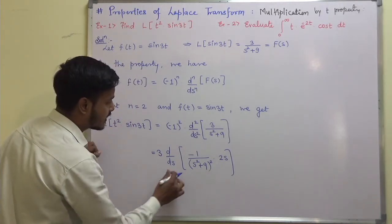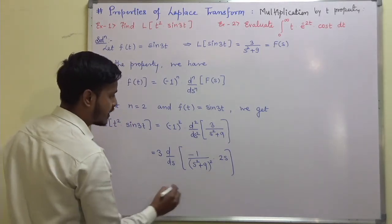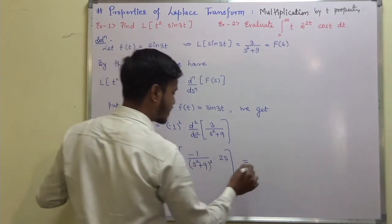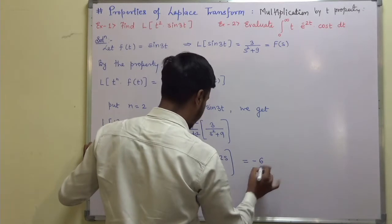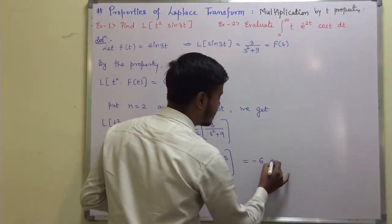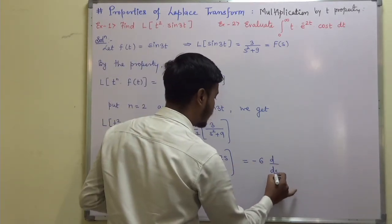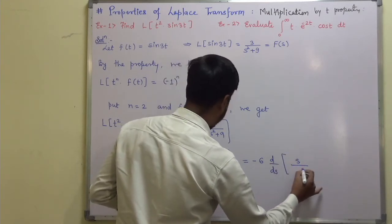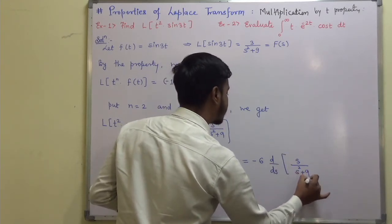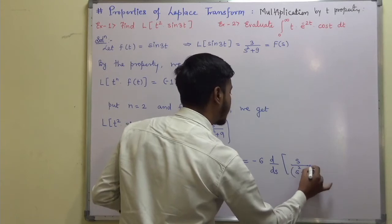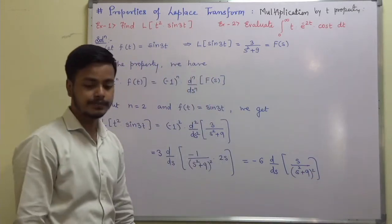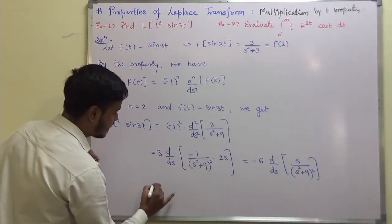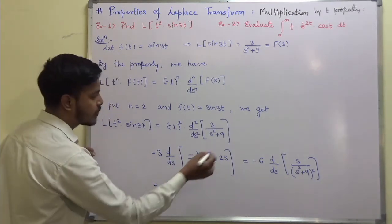Now take one more derivative. Before that, I take the minus 2 outside, giving minus 6. Now apply d/ds of s upon (s²+9) whole squared. Apply the quotient rule there.